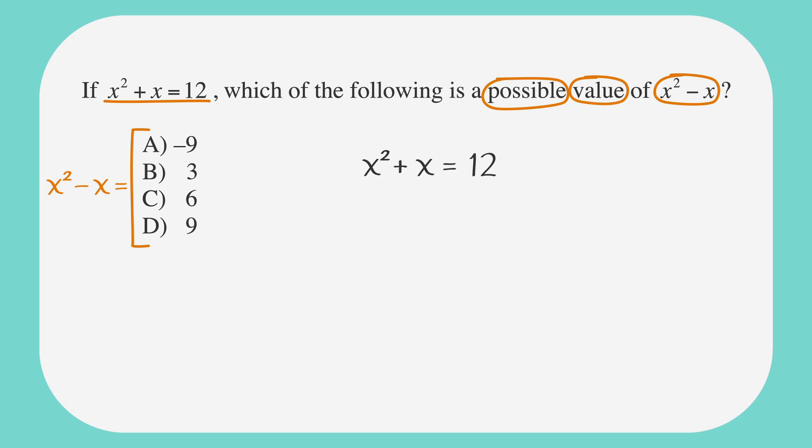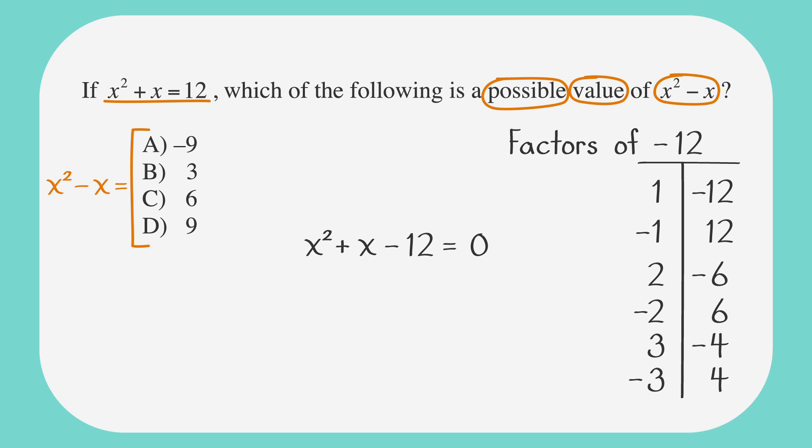We'll factor this quadratic in order to solve for x. To factor a quadratic, recall that we must first make the equation equal 0. We'll subtract 12 from both sides to get x² plus x minus 12 equals 0. To factor the quadratic, we look for two numbers that will multiply to get negative 12, which is the constant, and that add up to 1, because 1 is the coefficient of x. The factors of negative 12 are 1 and negative 12, negative 1 and 12, 2 and negative 6, negative 2 and 6, 3 and negative 4, and negative 3 and 4.